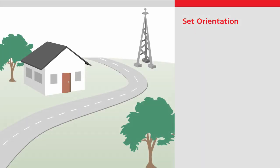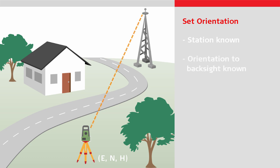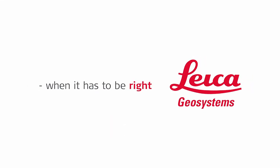So in summary, the set orientation method is a simple method to use when you know the point over which you will position the total station and you know the orientation to the backsight point. Please do watch the other videos to learn more about the individual methods. Thanks for watching.